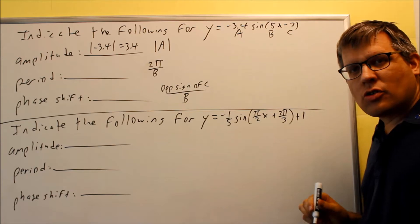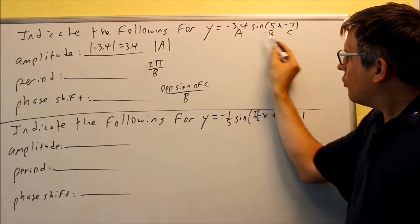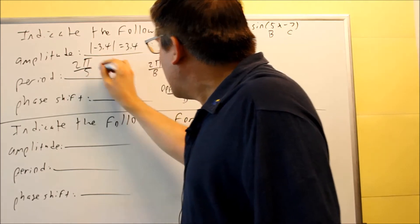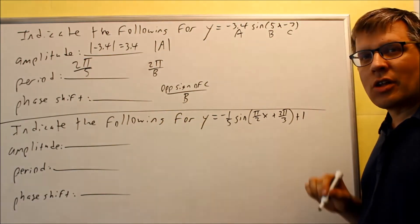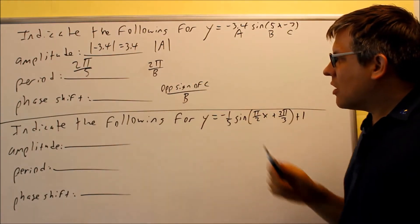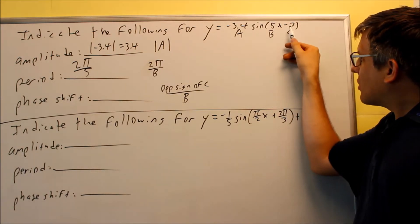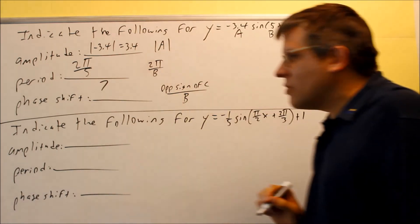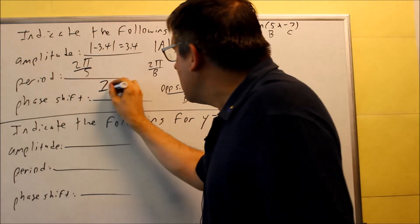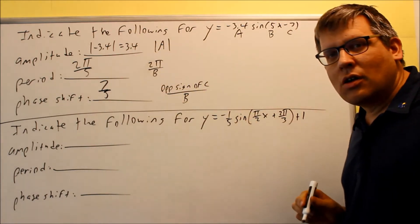Next let's do period. Period is 2π divided by B. 2π is always constant, it's always part of your formula. The B would be the value in front of the x. So you're going to do 2π divided by 5, and there's nothing more we have to do with that. For phase shift, it says opposite sign of C over B. Since I have a minus 7 here, I want to make it a positive 7, and then we're dividing that by B. The B is the number in front of the x, so it's going to be 7/5. That would be the answer that completes the first question.